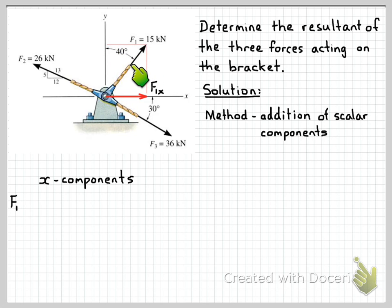You could, if you feel more comfortable, make this 50 and say that F1x equals F1 cos 50. I've used the angle that's indicated here, so we have F1x equals 15 sine 40, which is 9.642 newtons.